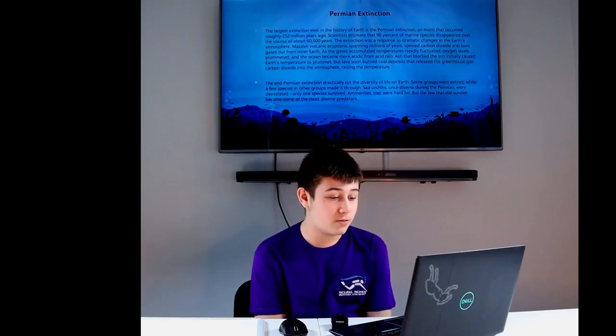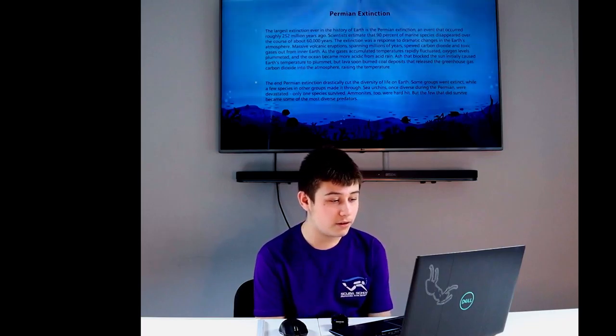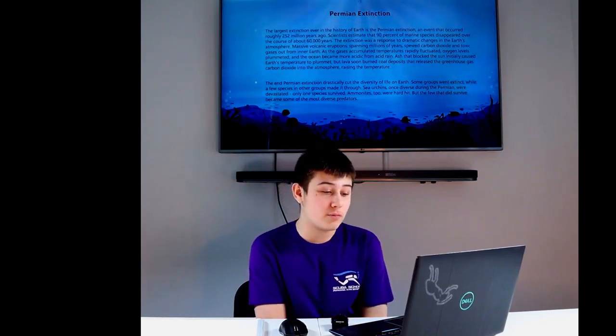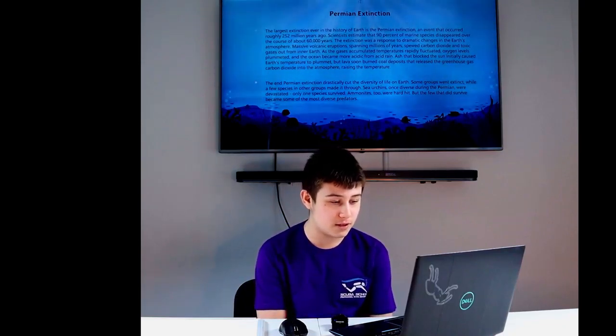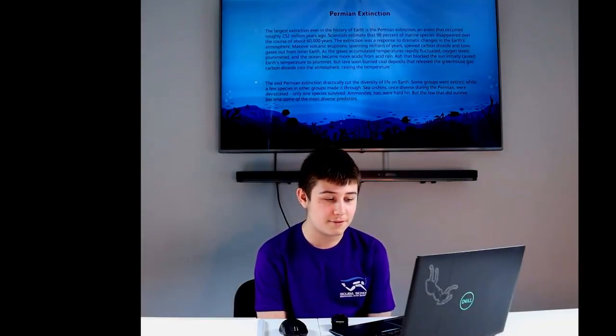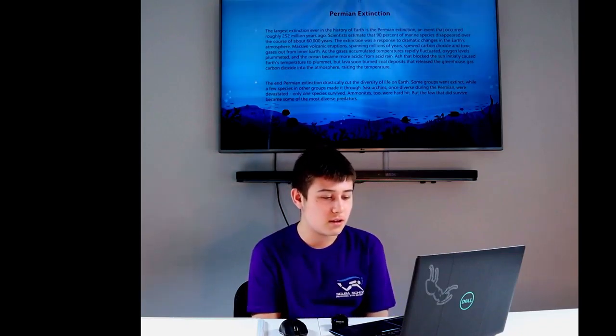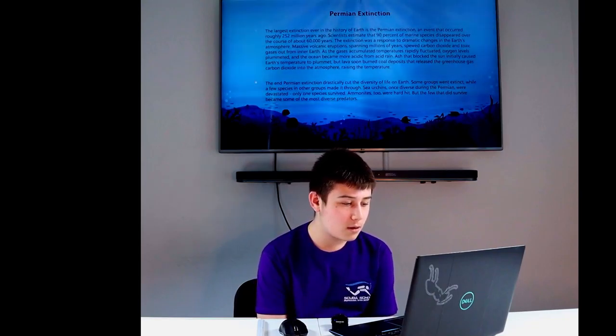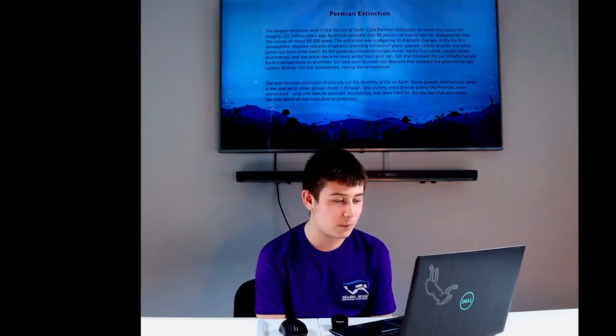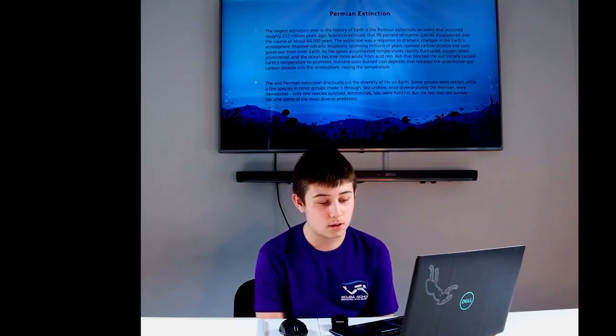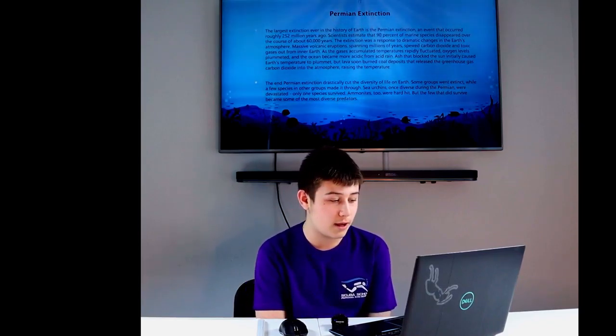The largest extinction ever in Earth's history is the Permian extinction, an event that occurred roughly 252 million years ago. Scientists estimate that 90% of marine species disappeared over the course of about 60 million years. Their extinction was a response to dramatic changes in the Earth's atmosphere. Massive volcanic eruptions spanning millions of years spewed carbon dioxide and toxic gases out from the inner Earth. As the gases accumulated, temperatures rapidly fluctuated, oxygen levels plummeted. The oceans became more acidic from acid rain. Ash that blocked the sun initially caused Earth's temperature to plummet, but lava soon burned coal deposits that released greenhouse gases, carbon dioxide into the atmosphere, raising the temperature. The end of the Permian extinction drastically cut the diversity of life on Earth. Some groups went extinct, while a few species in other groups made it through.